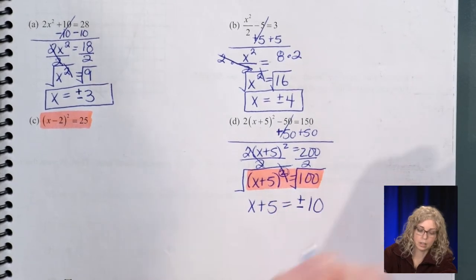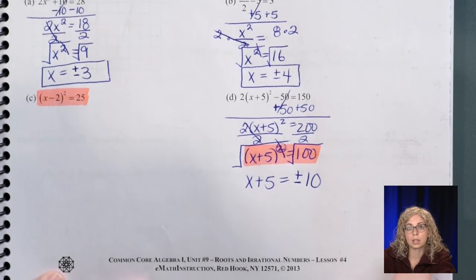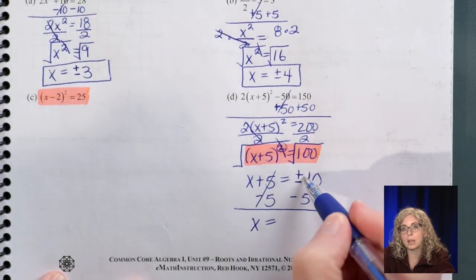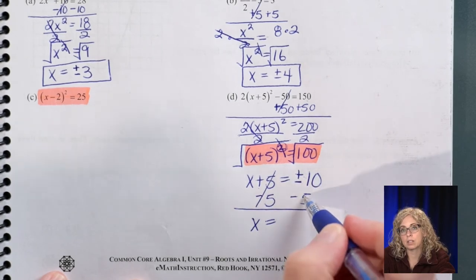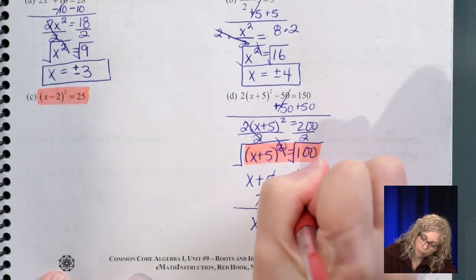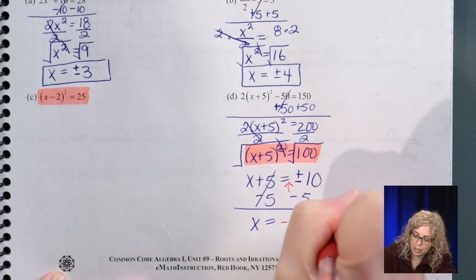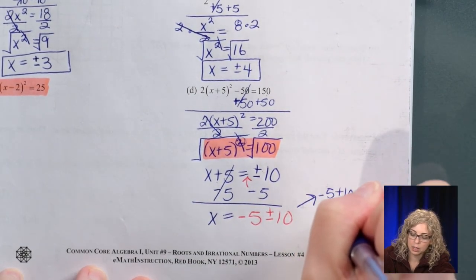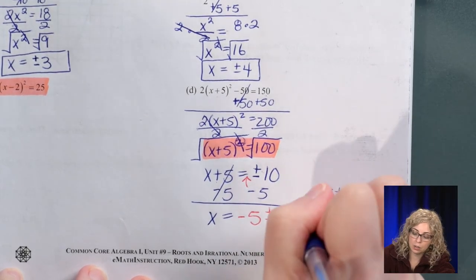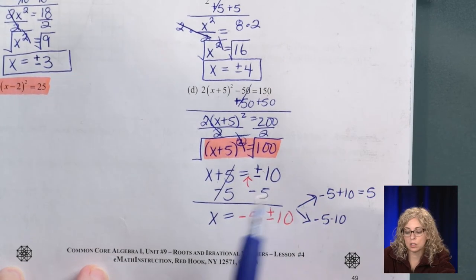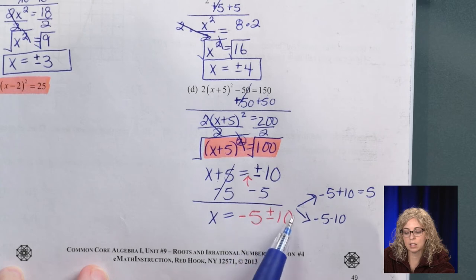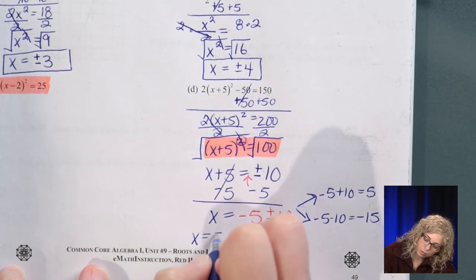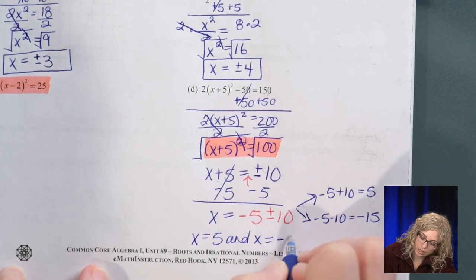So x+5 equals ±10. We include that plus-minus in this step, then undo the addition of 5 by subtracting 5: x equals −5±10. Taking the positive case: −5+10=5. Taking the negative case: −5−10=−15. So x equals 5 and x equals −15.